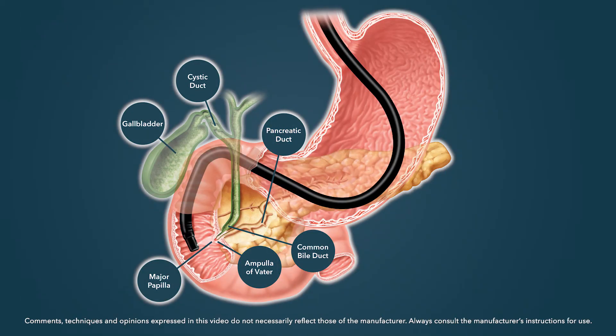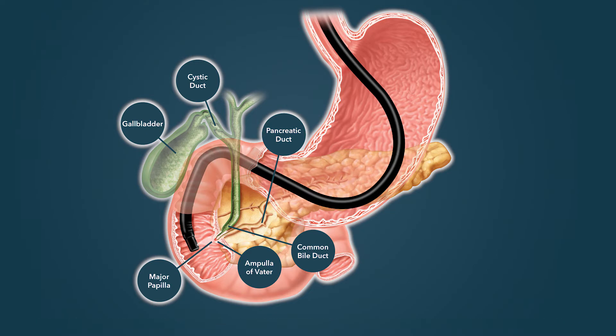The pancreaticobiliary system is really a plumbing system, which involves drainage of bile from the liver and pancreatic juice from the pancreas. These fluids are carried in ducts, and these ducts come out through an opening at the ampulla of Vater. Fortunately, this area is easily accessible with a duodenoscope, and through the duodenoscope, we can conduct many therapeutic interventions.